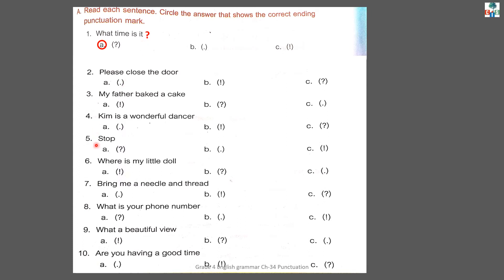Let's see number 5. Here only one word is written: 'Stop.' Stop means when you want to make somebody alert — it is an imperative word, you are alerting someone. So which punctuation mark do we use? Yes, option number C — exclamation mark. You have to put the exclamation mark after the word 'Stop.' Children, try to put these punctuation marks after all these sentences.